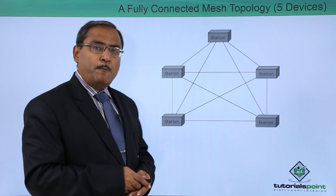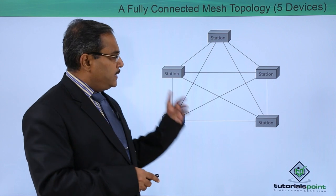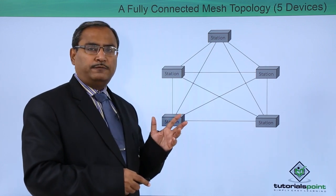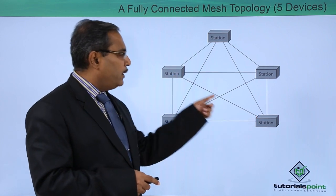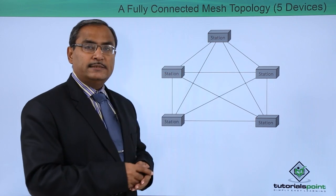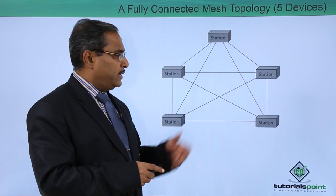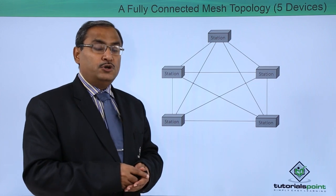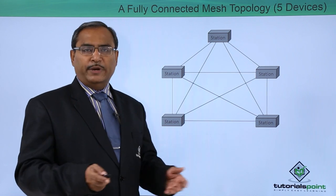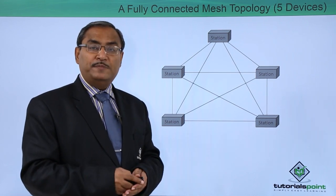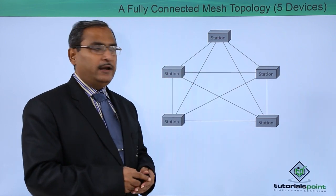Here we have a completely connected mesh topology. In a completely connected mesh, for any two pairs of stations, you can find one dedicated link in between. With five nodes, the number of links required is 5C2 = 10. Counting all the links connecting these five stations, you will find 10 links. This is our completely connected mesh network.